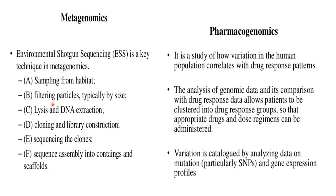Metagenomics uses environmental shotgun sequencing as its key technique. The process involves sampling of the habitat, filtering particles typically by size, lysis and DNA extraction, cloning and library construction, sequencing of clones, and sequence assembly by contigs and scaffolds.